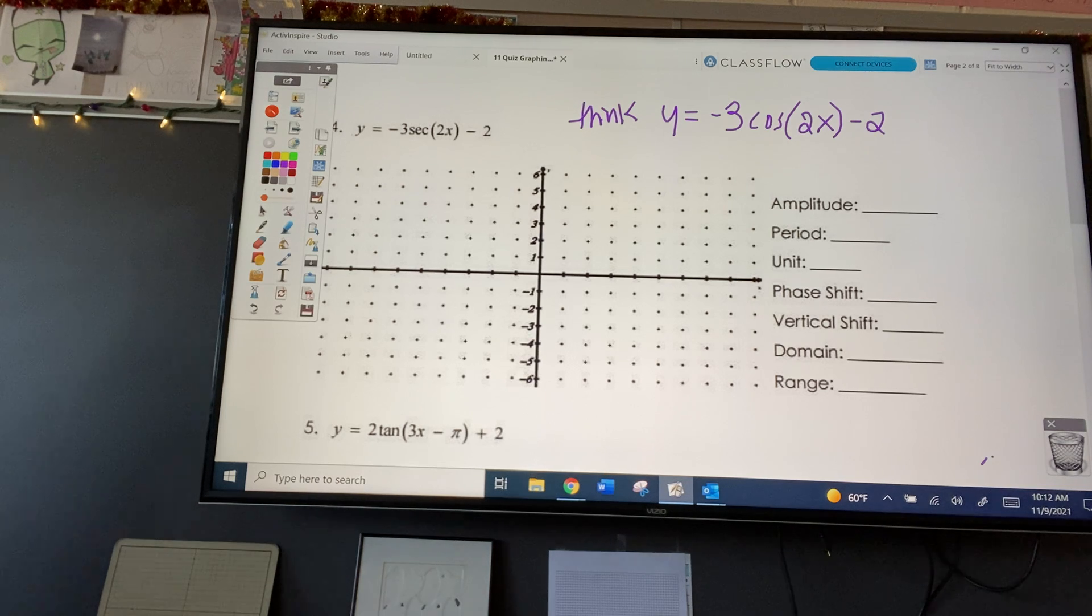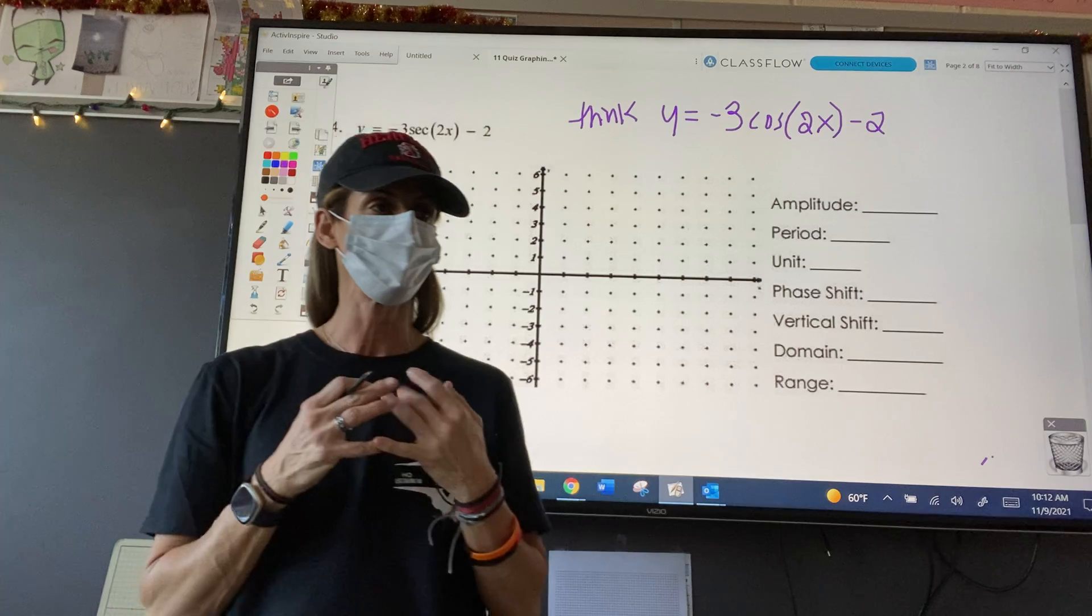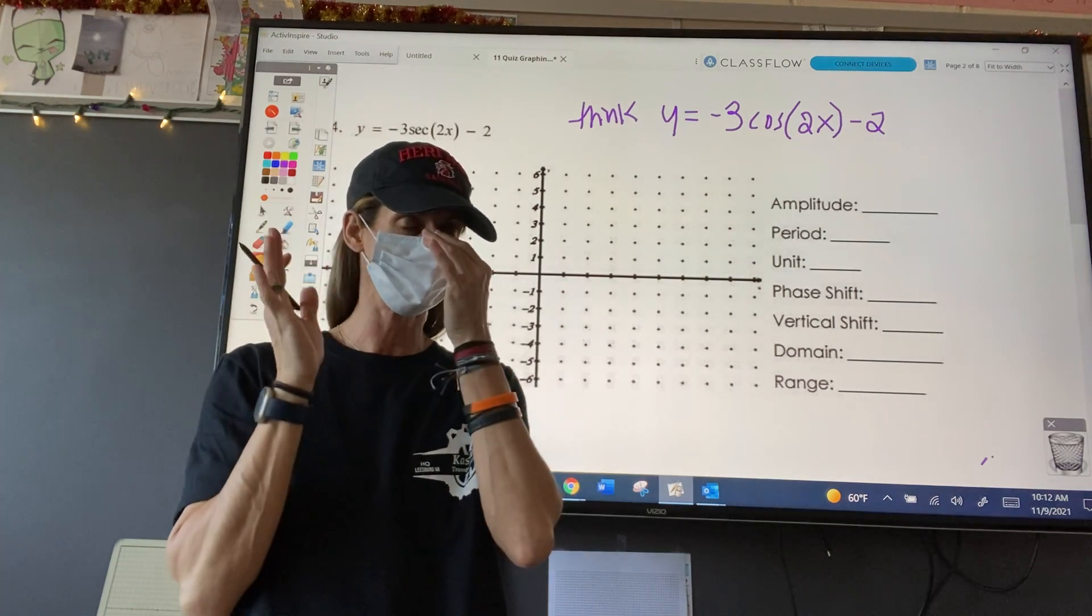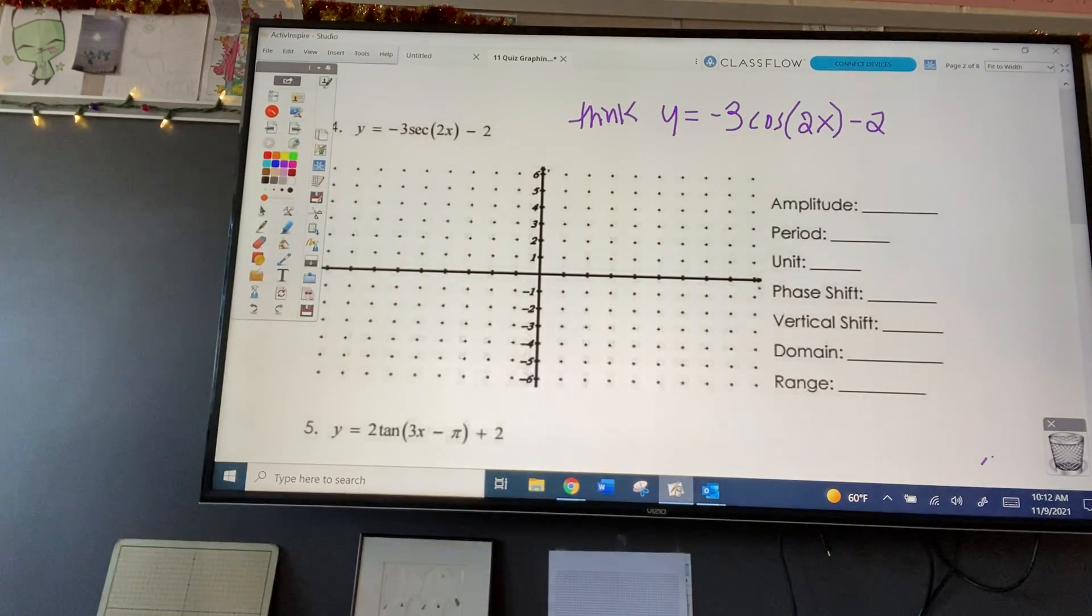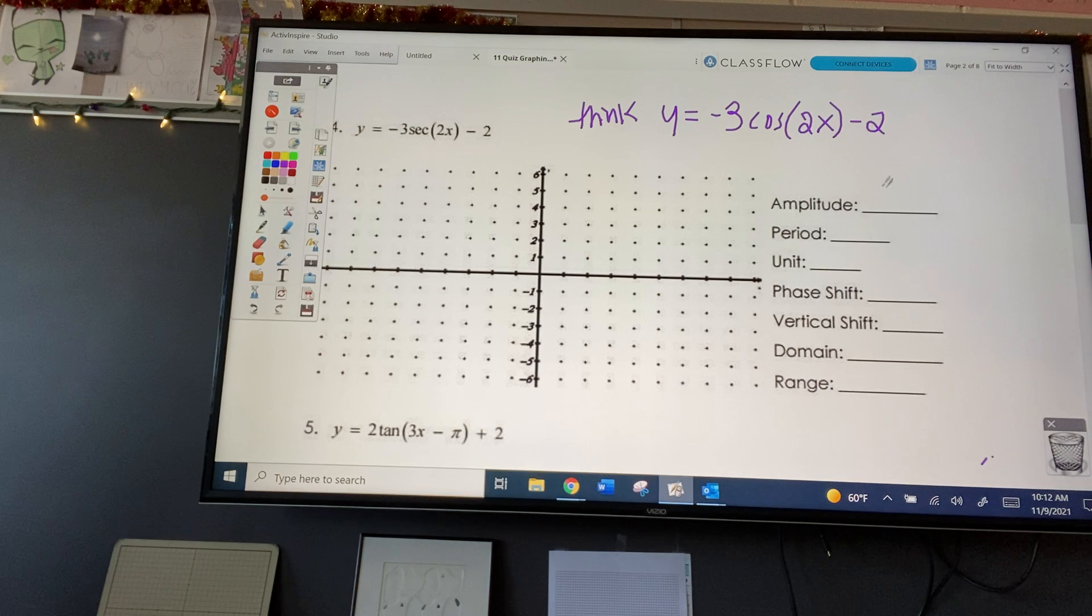What's the amplitude? 3. All right, and so since the amplitude is always positive, it's the absolute value of negative 3, which is 3.